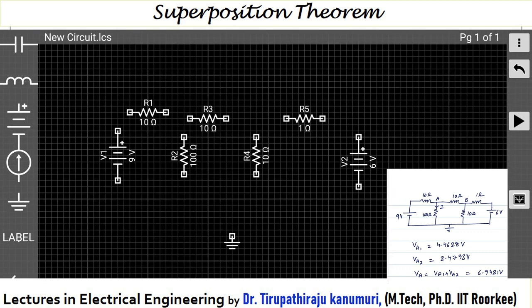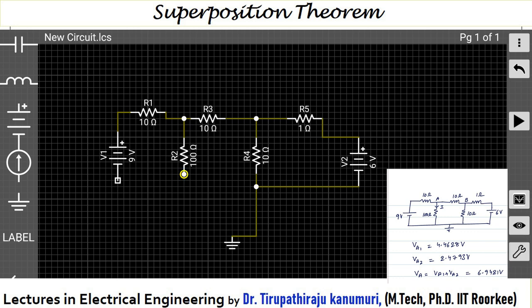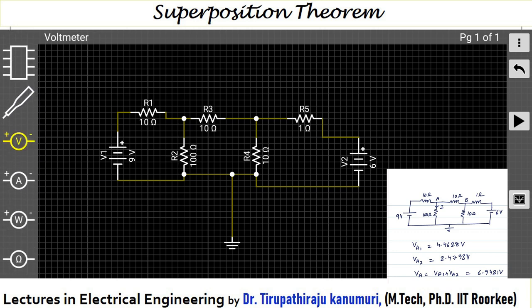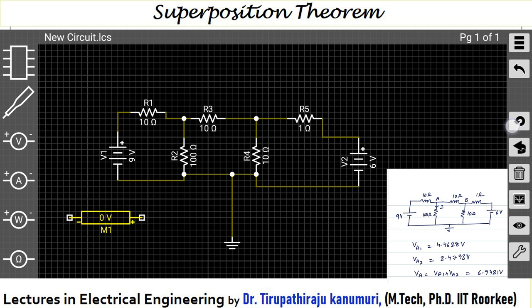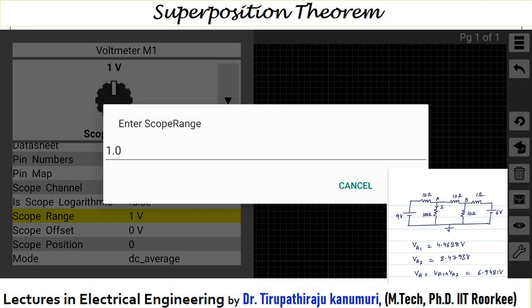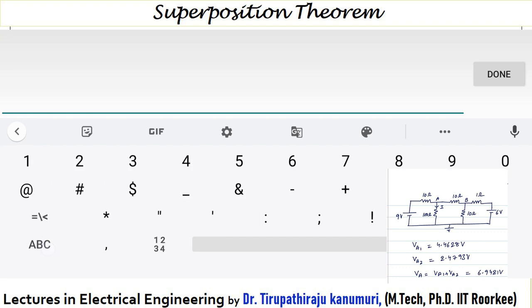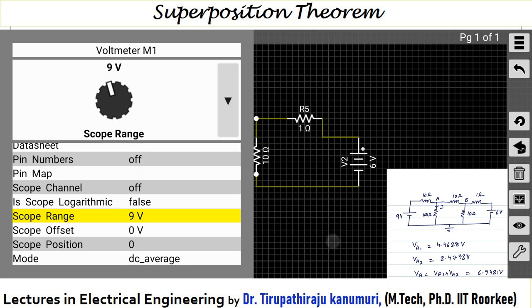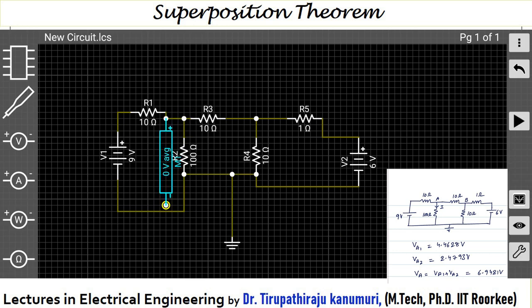To make connections in CircuitSafari, click on the rectangular block of one component then click on the rectangular block of the second one. I made all the connections accordingly. To measure the voltage across 100 ohms, I placed a voltmeter — scrolling down to find it. I rotated it so the plus is on top. The voltmeter is set to DC average and the scope range is set to 9 volts since the maximum battery voltage is 9 volts.